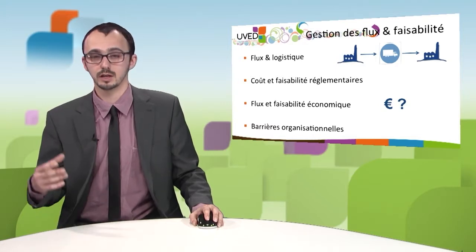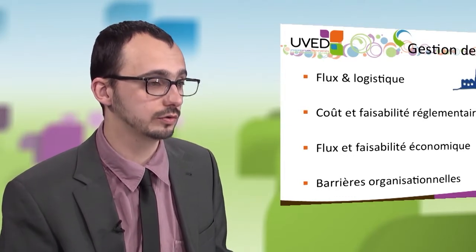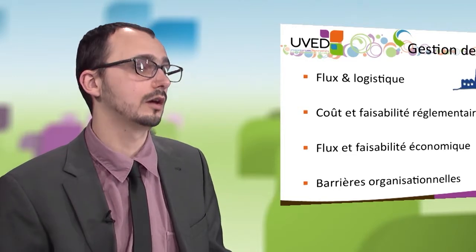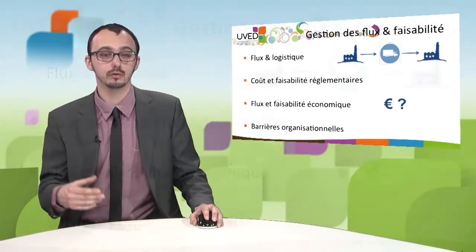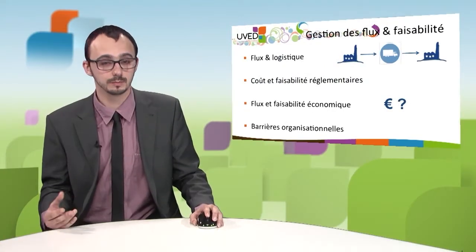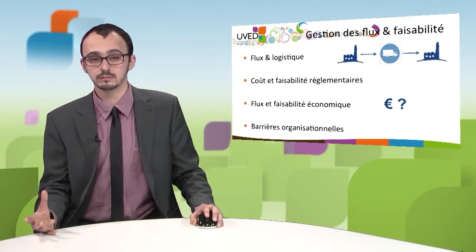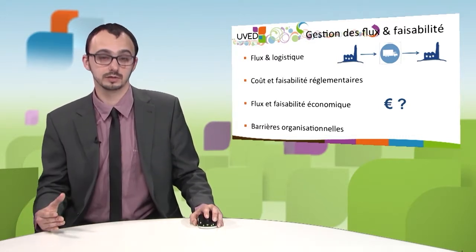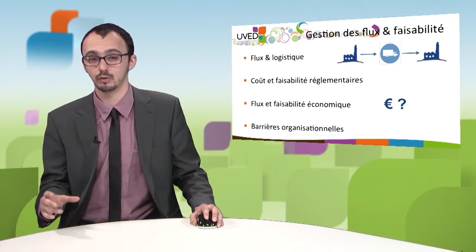All synergies need to represent an economic benefit for the players — either by selling a waste or by decreasing the cost of procurement. But many factors can impact the financial equation: calibrating the flow can require the construction of a platform, transportation is a cost whether through infrastructure investment or haulage fees, and regulatory studies add significant additional costs. The cost difference between the initial linear cost and the circular cost is key and crucial to defining the interest of a synergy.